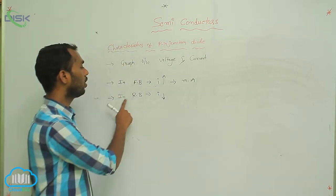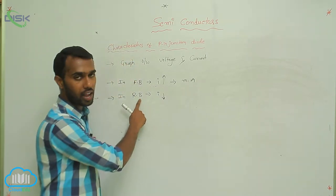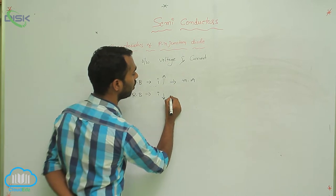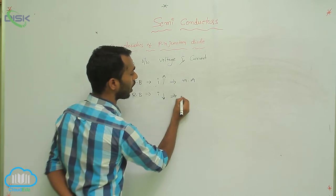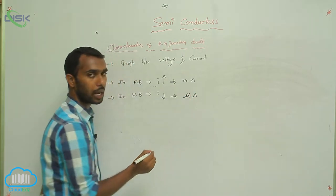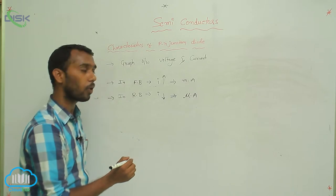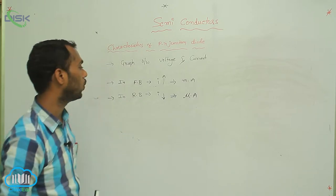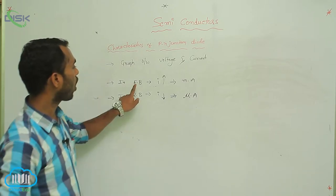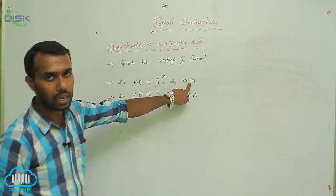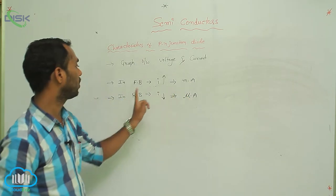In forward bias, current is more, that is why current measures in milliampere. In reverse bias, current is less — very very less — that is why current measures in microampere, which is 10 to the power of minus 6, a very very less value.